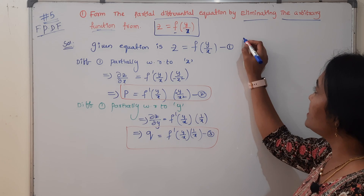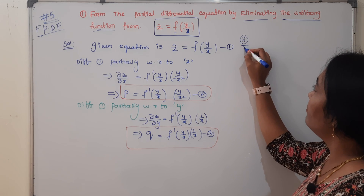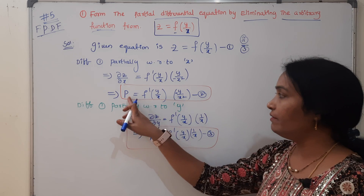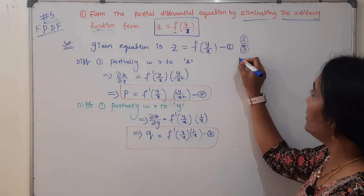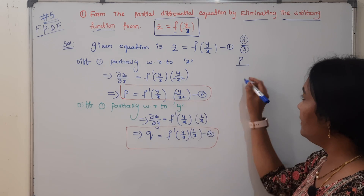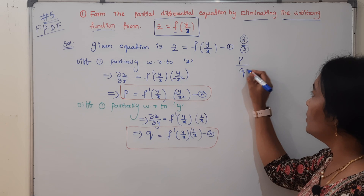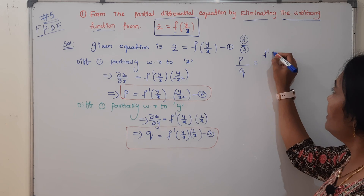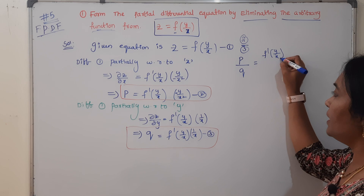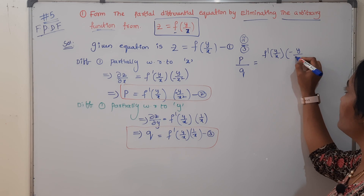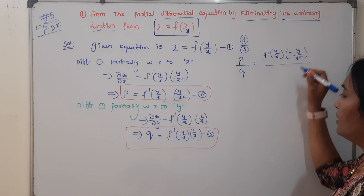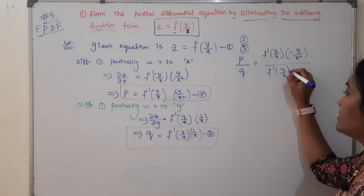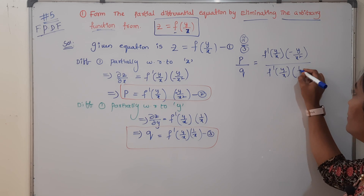Now equation 2 divides equation 3. What is our second equation? P on the left side. The ratio p over q gives us: f dash(y/x) times (minus y/x²) divided by f dash(y/x) times (1/x).